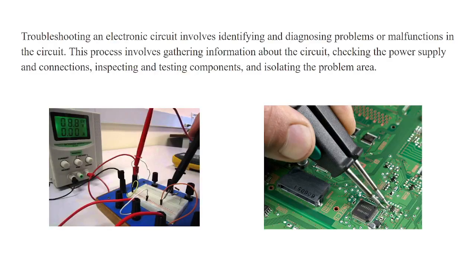Why is troubleshooting required? Suppose if there is any circuit and it is creating a problem, troubleshooting is a technique to find out the problem and resolve it, so that it will improve your circuit performance. Troubleshooting an electronic circuit involves identifying and diagnosing problems or malfunctions, gathering information about the circuit, checking the power supply whether it is in proper range, checking connections, testing components, and isolating the area that is affecting the circuit.